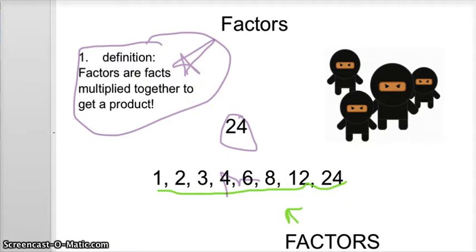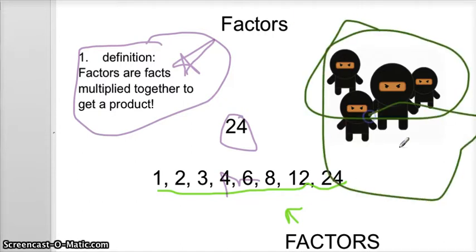The ninjas are here because it's like ninjas have swords and they chop things up. Well, when you have a factor, all you're doing is chopping it back - its facts up. So that's why we have the ninjas right here.